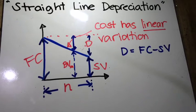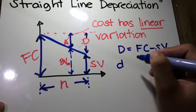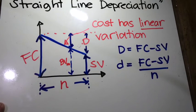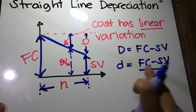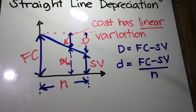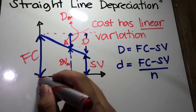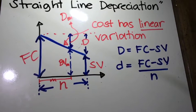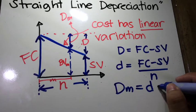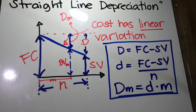Since this is a linear variation, if I want to get the depreciation per year — let's represent it as letter D — we simply divide that quantity by the number of years. So the depreciation per year D is equal to the first cost minus salvage value over the number of years n. From there, we can compute D sub m, which is the depreciation at time m. D sub m is simply equal to the depreciation per year D times m. These three are the basic formulas for straight-line depreciation.